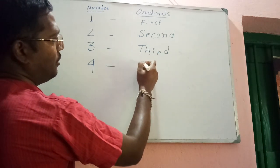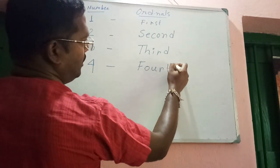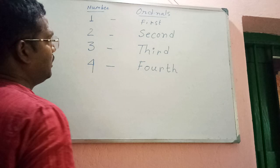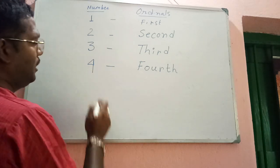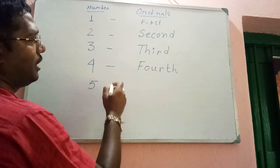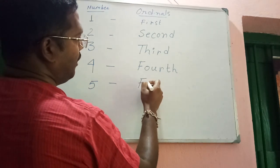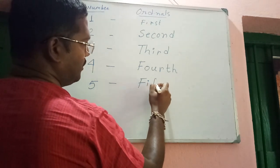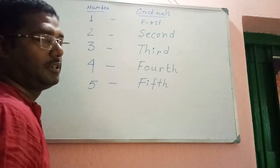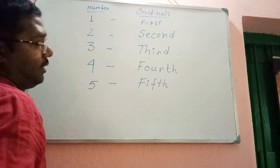Number is four and ordinal will be fourth — F-O-U-R-T-H. Okay. Next, number is five and ordinal will be fifth — F-I-F-T-H.